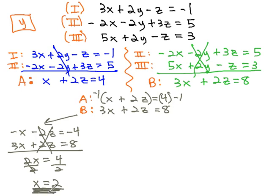We can find z by going back to either A or B, one of those equations we started with. Let's go back to A. A says x plus 2z equals 4, so 2 plus 2z equals 4.